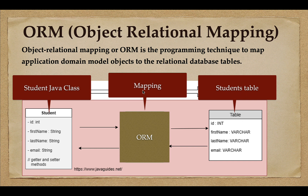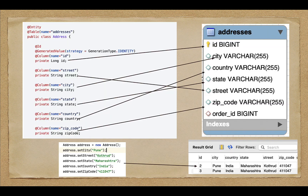So we can directly create an object of the Student class and store it directly in a students database table. We don't have to write a SQL statement to insert records into the students table — we can use ORM mapping to directly map the objects to the relational database table.